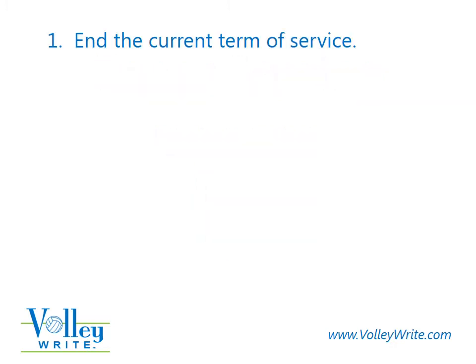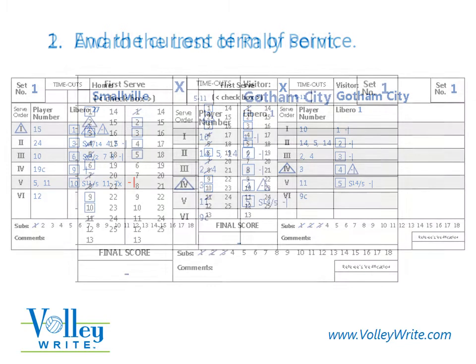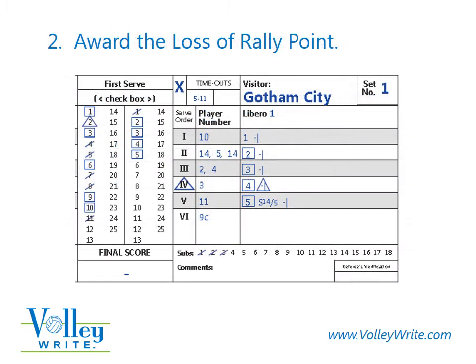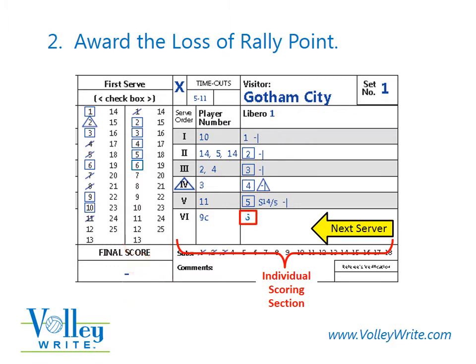First, end the team on the left's Term of Service with a dash bar. Award the loss of Rally Point in two steps. Draw a box around the next point number in the Running Score column. Then, in the Individual Scoring section, draw a square and write in the point number.